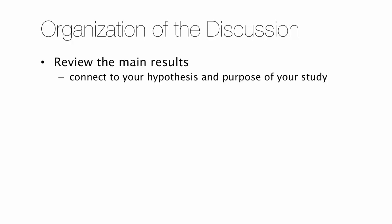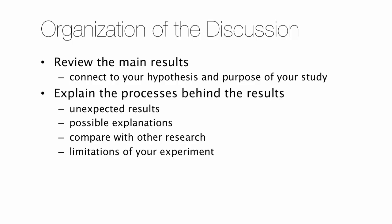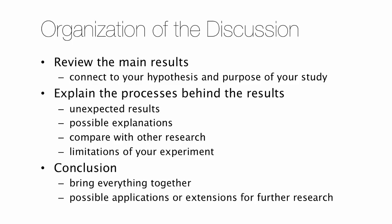In most discussion sections the authors start by reviewing the main results of the paper. Next, you should attempt to explain any unexpected results and the processes behind the patterns that you found. You should also evaluate the explanations you proposed by weighing the pros and cons in light of other people's research and considering any limitations with your experimental design. And finally, you should end your scientific paper with a proper conclusion that brings together everything that has been discussed and highlights the possible applications of the study or possible future research.